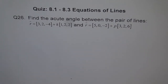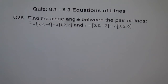Question 26. Find the acute angle between the pair of lines. R equals 3, 2, minus 4 plus k times (1, 2, 2), and R equals 5, 0, minus 2 plus p times (3, 2, 6). I'd like you to do this question.